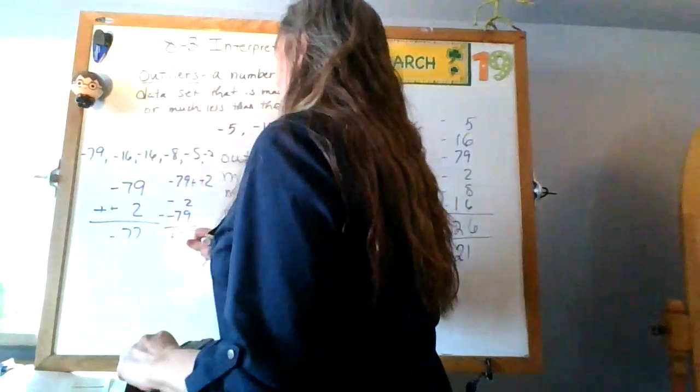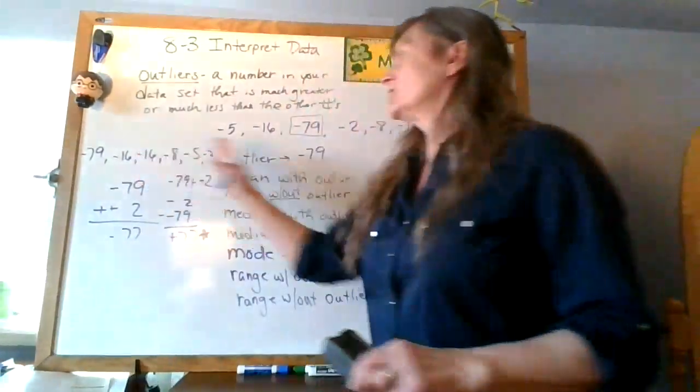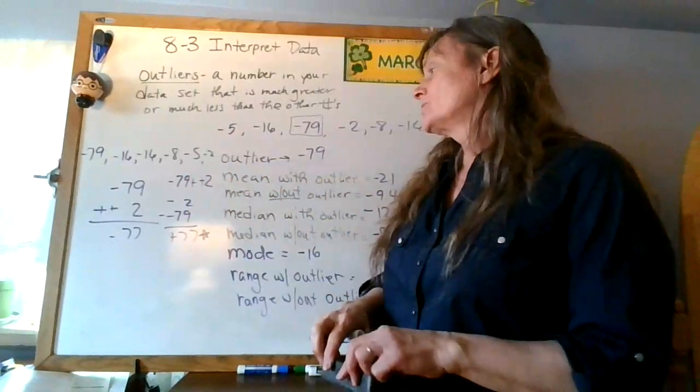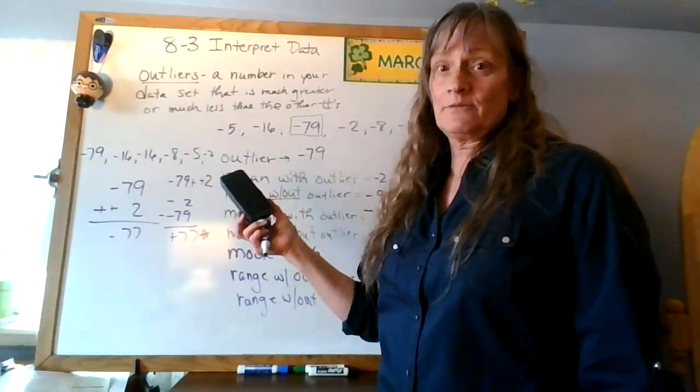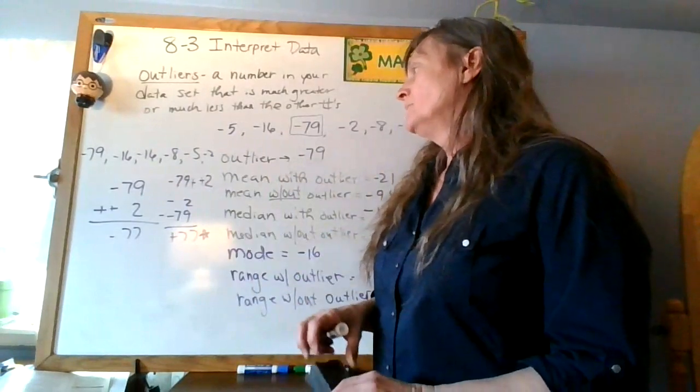What I always kind of want to go with a positive one because it shows me the distance in between. So the range, I have 77 numbers in between those, okay. That's going to be my answer.